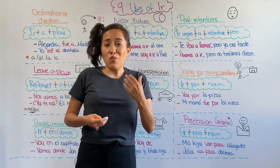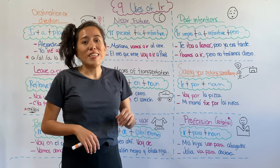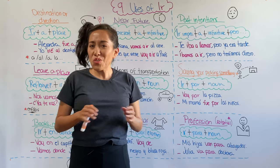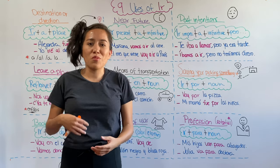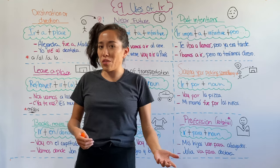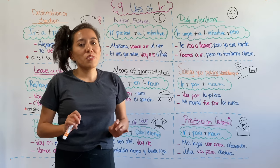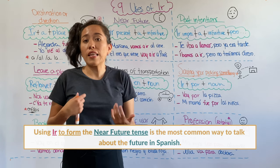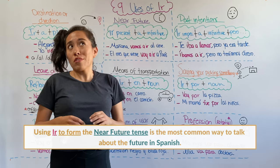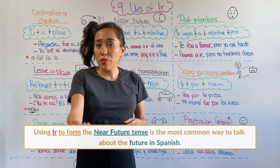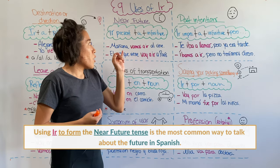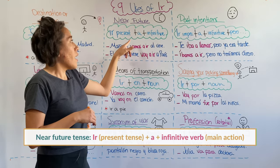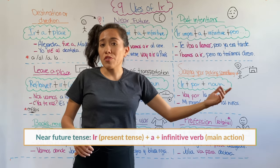Another common use of ir that you might want to learn is to use it to talk about future actions. Don't you hate learning new tenses with new endings and new regular verbs? Well, let me tell you a little secret. In Spanish, we actually use ir — more than a little bit more — to talk about the future. You're going to conjugate ir in the present tense, plus a, plus an infinitive verb.